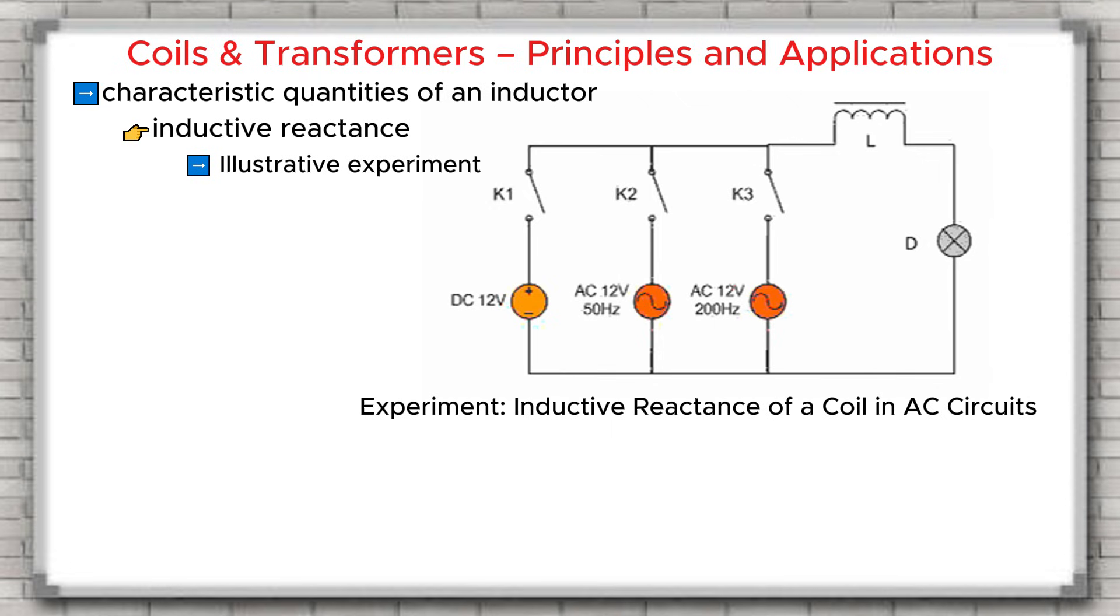When K2 is closed, an alternating current of 50 Hertz flows through the coil. Since the inductive reactance ZL increases, the current becomes weaker and the bulb glows dimmer. When K3 is closed, an alternating current of 200 Hertz flows through the coil. At this higher frequency, the inductive reactance ZL is the highest, the current through the coil is the weakest, and the bulb glows the dimmest.